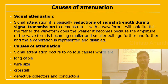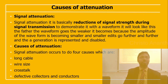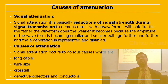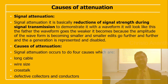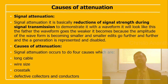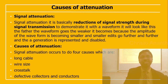The causes of attenuation include: long cable length, wire size, crosstalk, and defective conductors. These are the primary causes of signal attenuation.